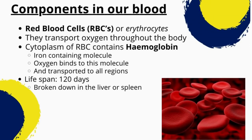Red blood cells (RBCs), or erythrocytes, transport oxygen throughout the body. The cytoplasm of RBCs contains hemoglobin, an iron-containing molecule where oxygen binds and is transported to all regions. The lifespan of an RBC is 120 days, after which it is broken down in the liver or spleen. Red blood cells carry oxygen to the cells and tissues.